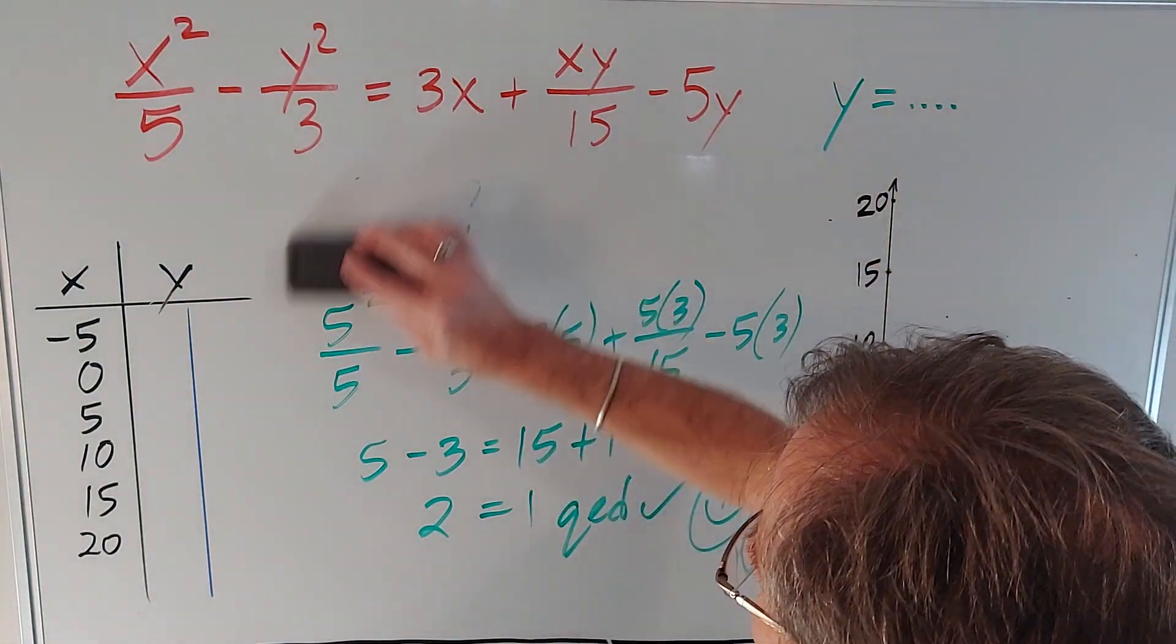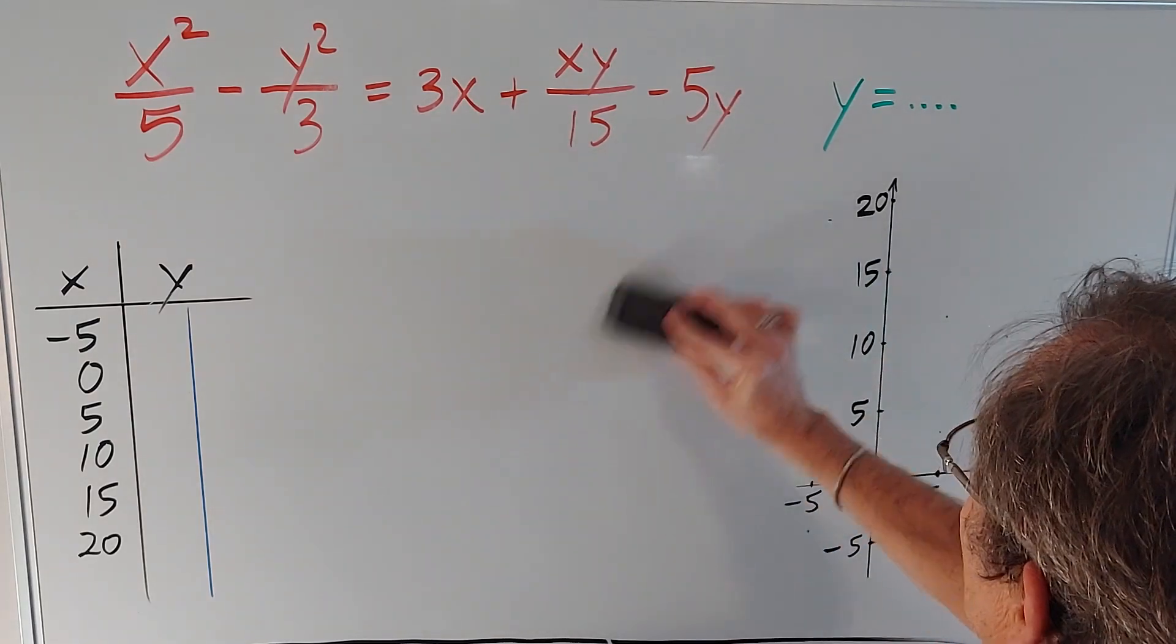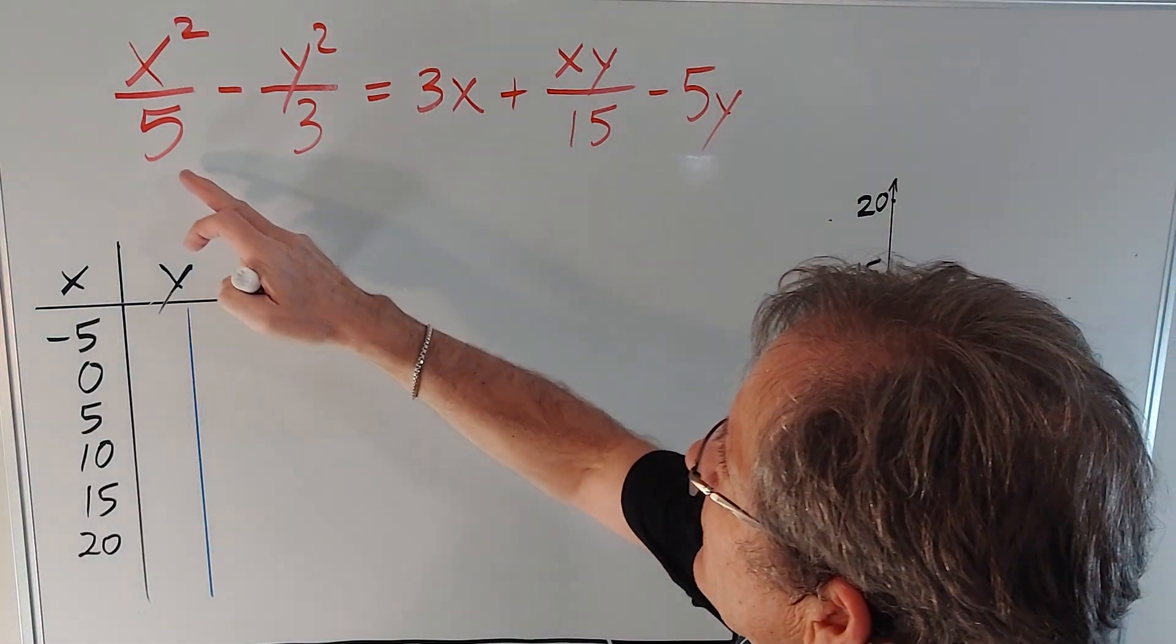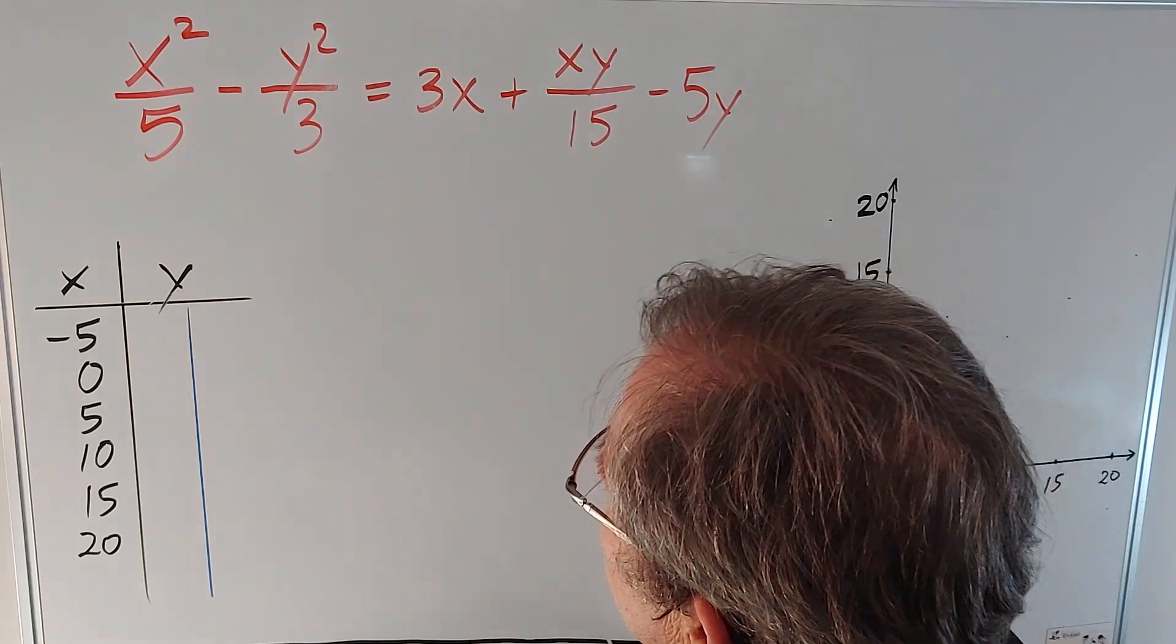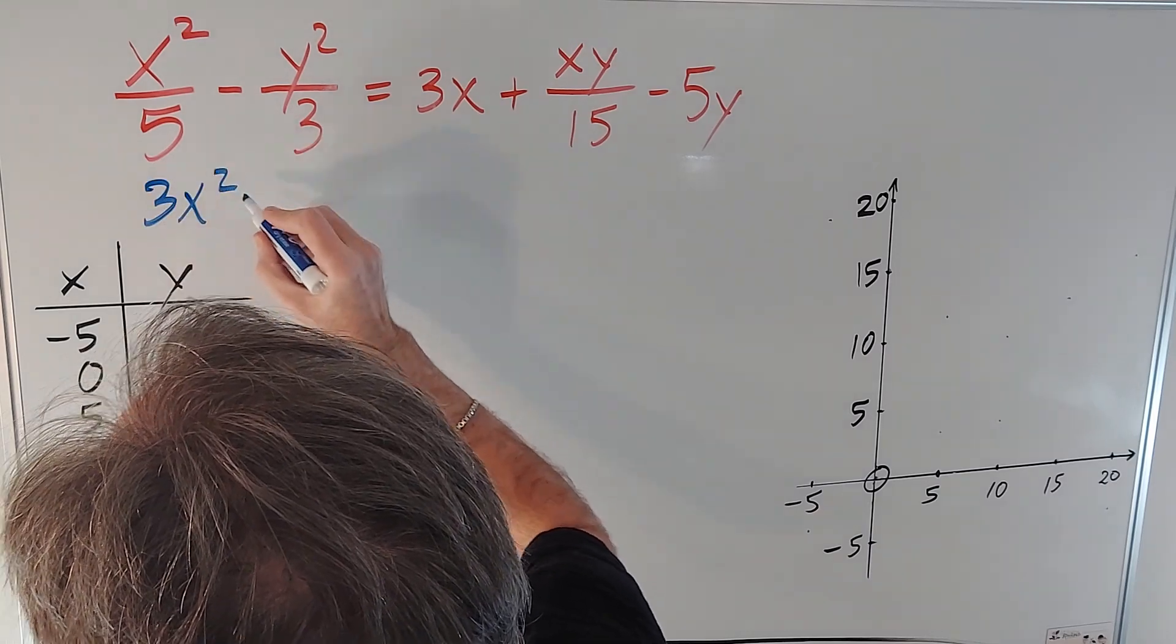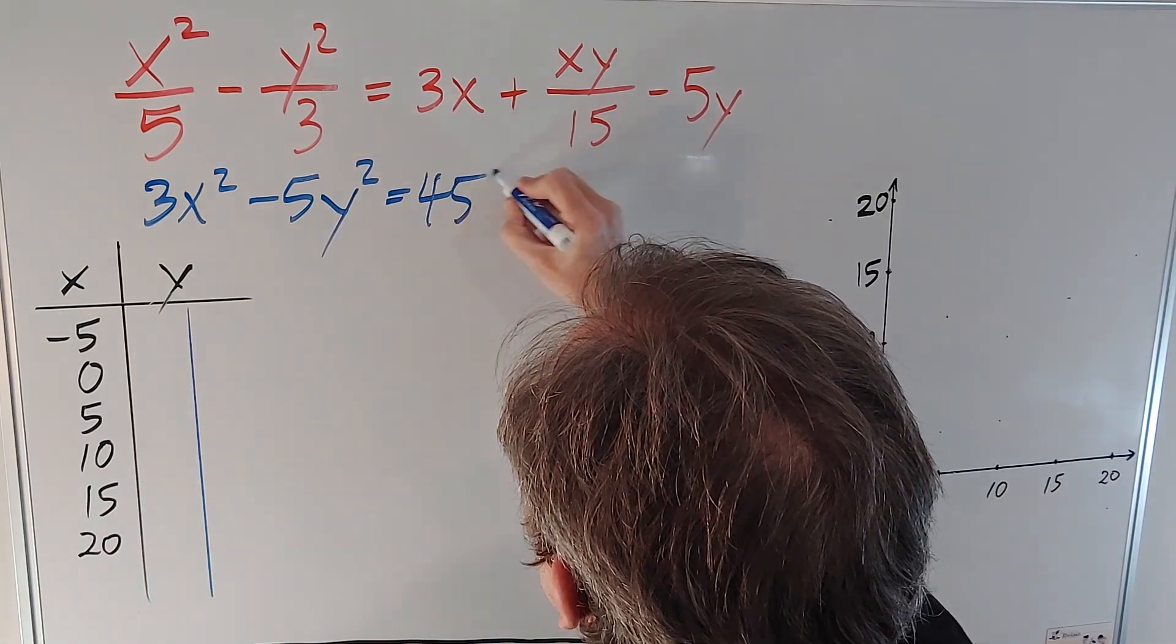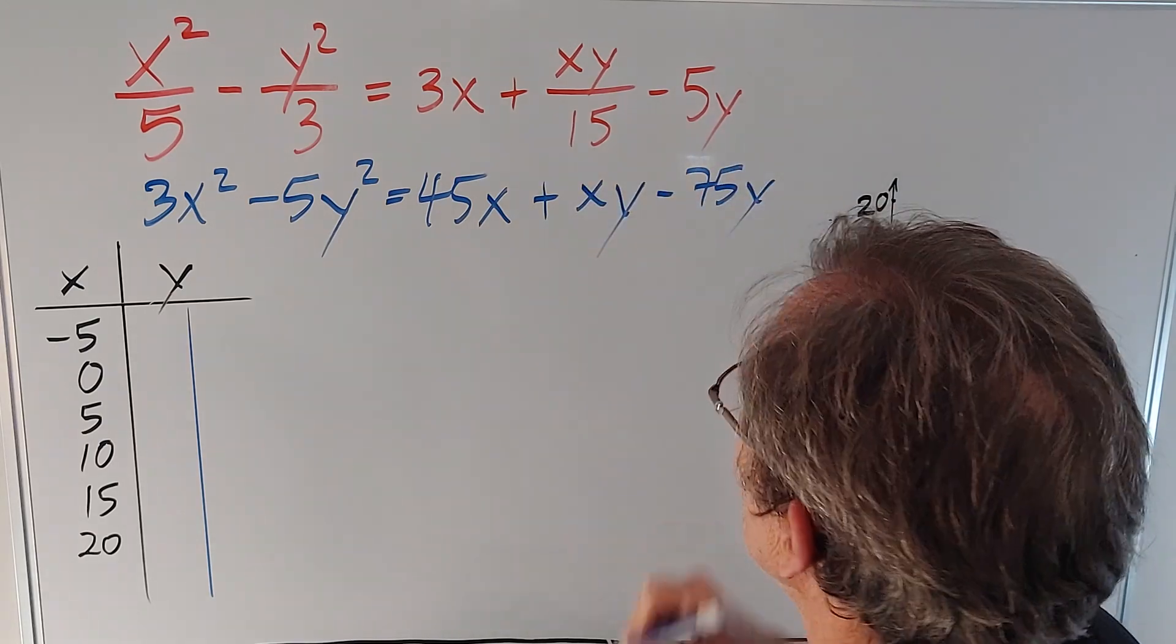Okay, so let's analyze this function in order to get enough points so that we can graph it. To do that, it's probably a good idea to get rid of the fraction. So if I multiply everything by the lowest common denominator, which is 15, I'm going to get 3x² - 5y² = 45x + xy - 75y.